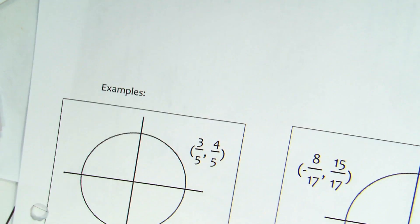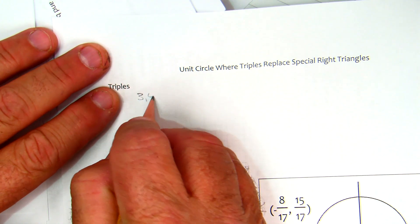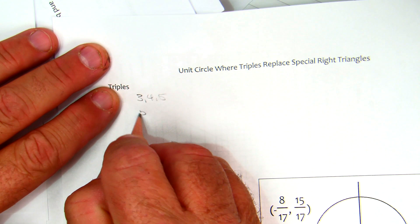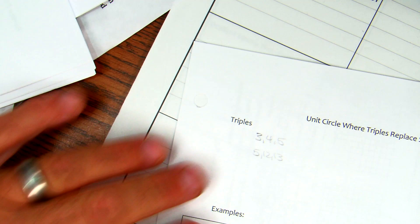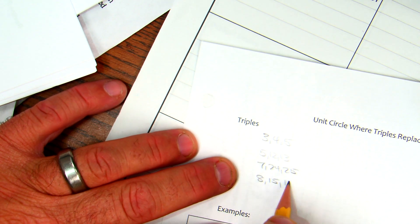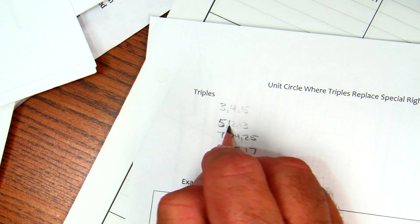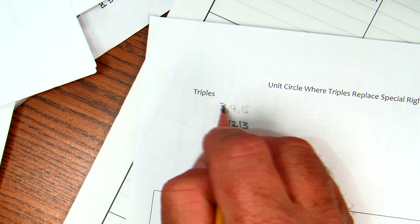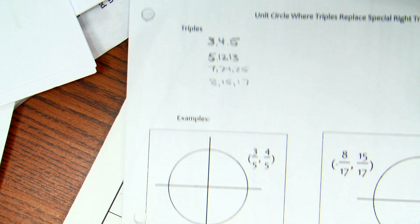Last thing: unit circle where triples replace special right triangles. So, the triples, in case you do not recall, are 3, 4, 5; 5, 12, 13; 7, 24, 25; and 8, 15, 17. There are others, but those are the ones that probably will show up in this.